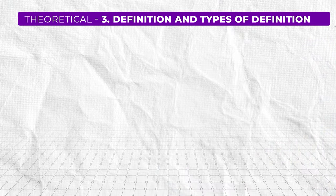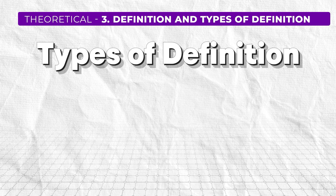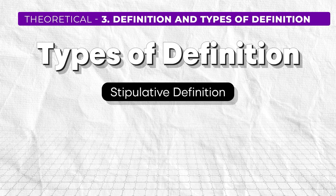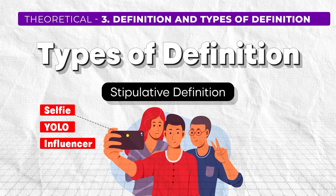The next kind of theoretical question you might see in the UGC Net question paper is about types of definition. There are various types; one common type is stipulative definition, in which a new term is given a specific meaning. For example, 'selfie' is a 21st century term you will not find in older dictionaries. Stipulative definition refers to newly coined terms and their definitions — like YOLO, Influencer, etc.